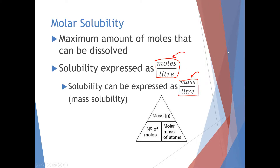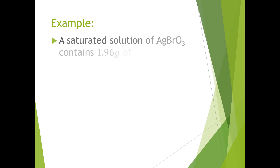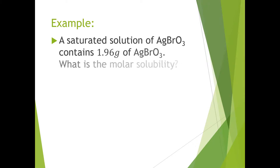Let's go to a quick example of how to calculate the molar solubility of something. Generally, you can calculate solubility once you've figured out at what point the solution has become saturated. For example, a solution of silver bromate gets saturated once you dissolve 1.96 grams of silver bromate, and once this quantity has been dissolved, the solution becomes saturated. This is an example of a very low solubility salt.